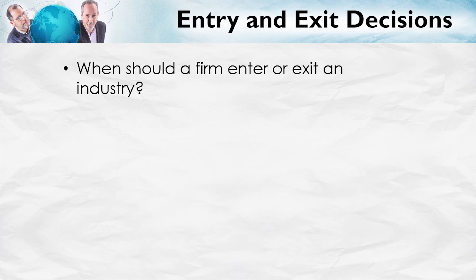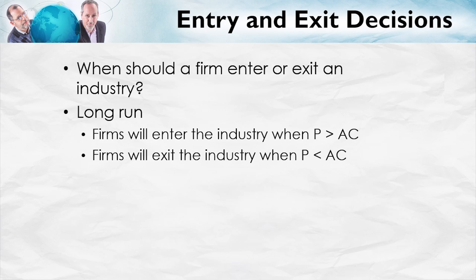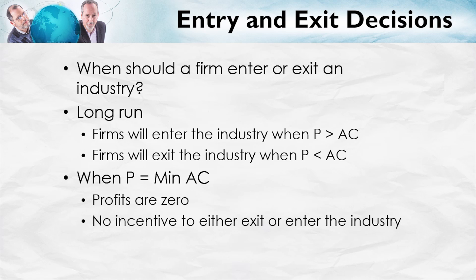So when should a firm enter or exit an industry? In the long run, firms will enter when price is above average cost. If price is somewhere above the average cost curve, then the firm can make a profit by entering, and that's what firms want to do. Firms will exit the industry when the price is below the average cost curve — they're going to be taking a loss and will want to exit. When the price equals the minimum of the average cost, profits are zero, and there's no incentive to either exit or enter the industry.